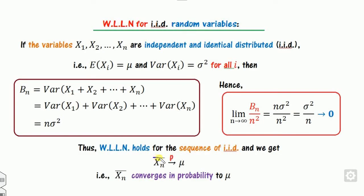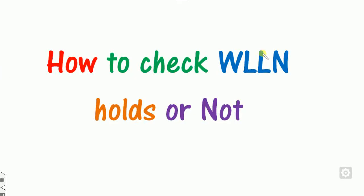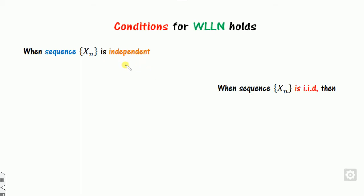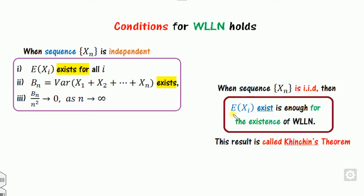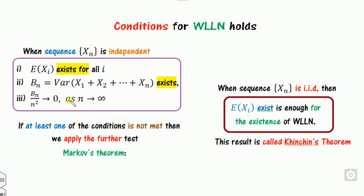Once the weak law holds, x_n converges in probability to mu. To check in general: first determine whether the sequence is independent only, or IID. If only independent, check all three conditions. If IID, you only need to verify that the mean exists — that is sufficient, and this result is called the Khinchin theorem. If at least one condition does not hold, apply the further test called the Markov theorem.